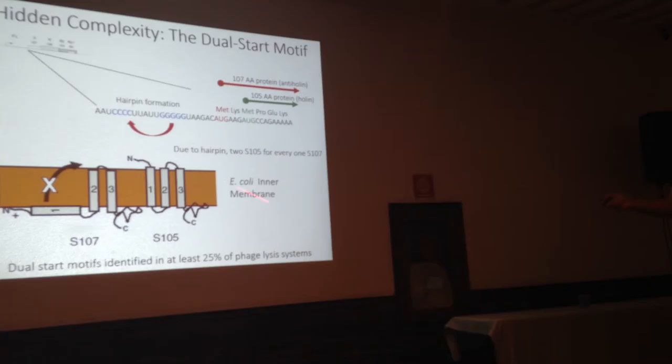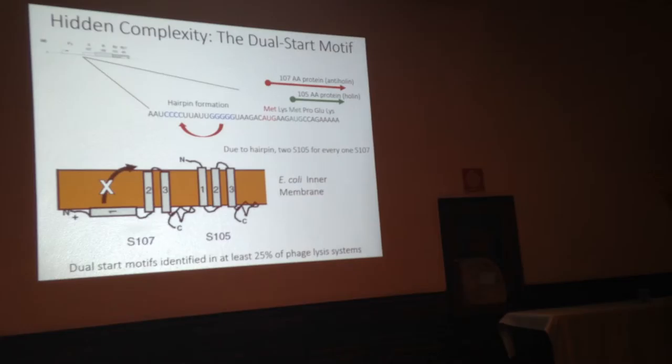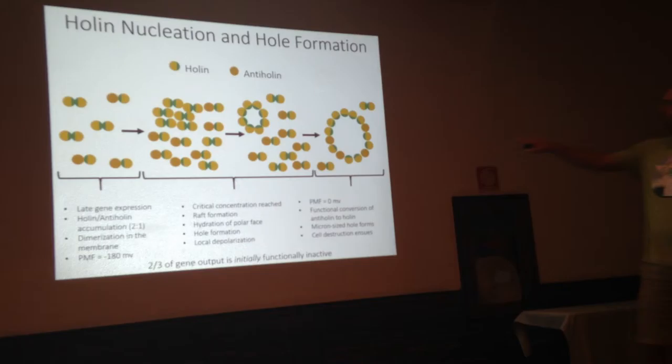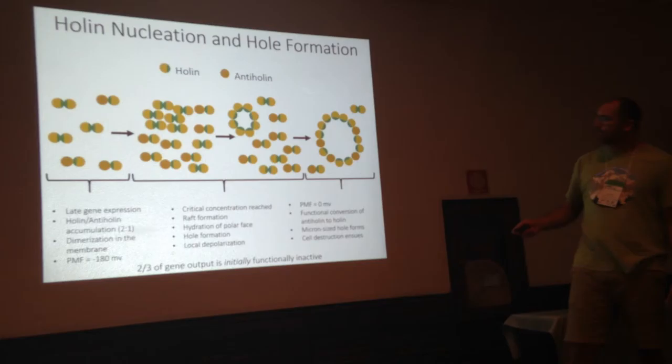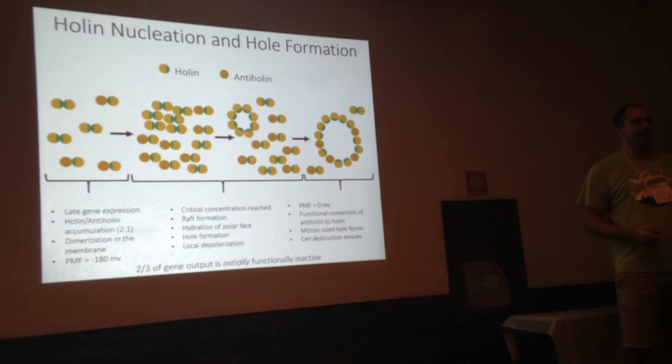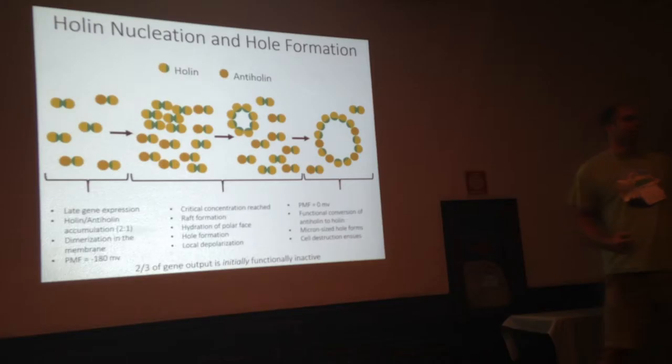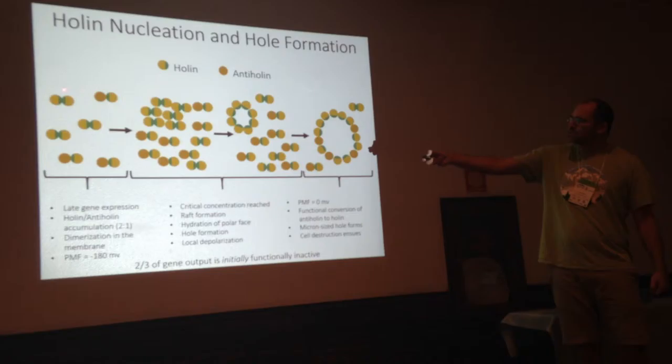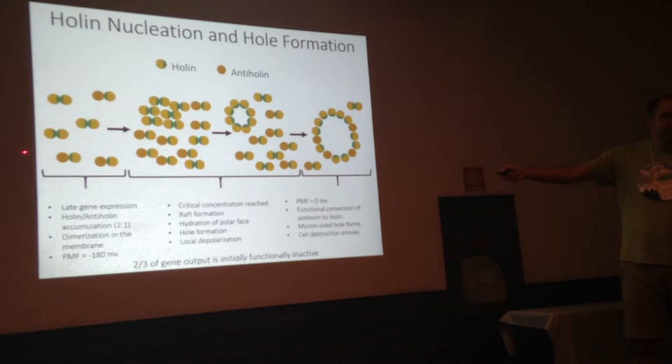This is also very significant because the dual-start motif has been identified in at least a quarter of phage lysis systems, and this may be an underestimate based on data from a paper published about 10 years ago. Here's some more detail about the holin and anti-holin in bacteriophage lysis. The holin molecule is shown in yellow, with green areas representing hydrophilic regions. When these two protein species are assembled in the membrane, they tend to dimerize with those hydrophilic regions coming together. The holin molecule also dimerizes with the anti-holin.